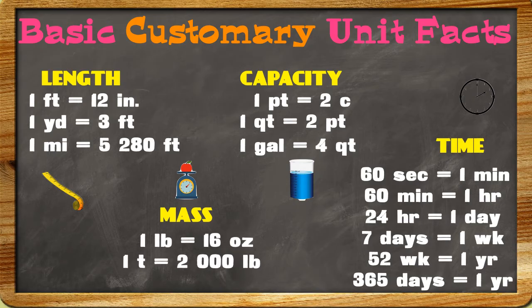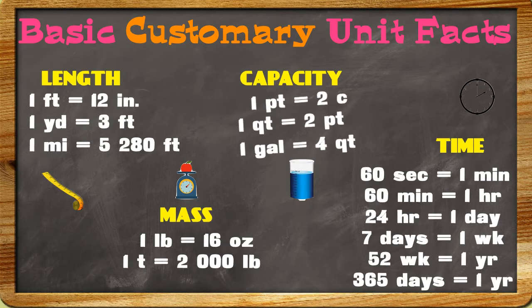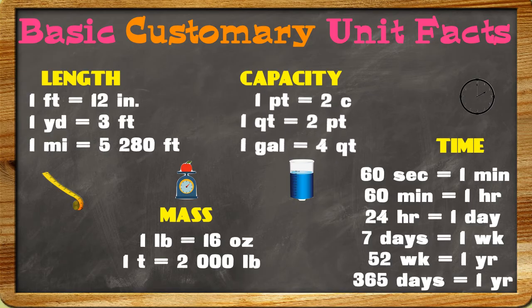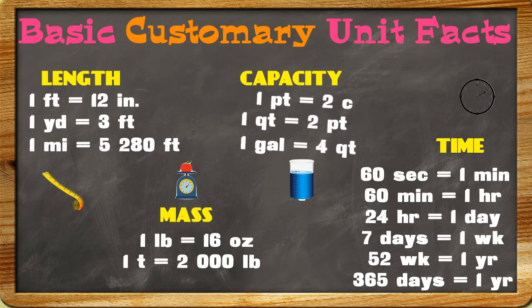To remember the customary facts for capacity, listen to this jingle: 2 cups in a pint, 2 pints in a quart, 4 quarts in a gallon — we're capacity profiling!